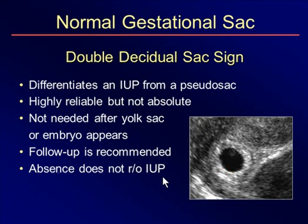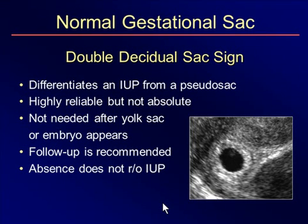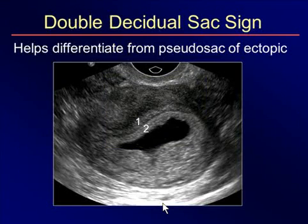This sign helps to differentiate from the pseudo sac, which only has one thickened border. The sign is highly reliable but not absolute. Once we see a little yolk sac, it doesn't matter because then we would be sure it's an intrauterine pregnancy. If any suspicion or uncertainty arises, definitely follow up — make no clinical decisions based on that sign alone.